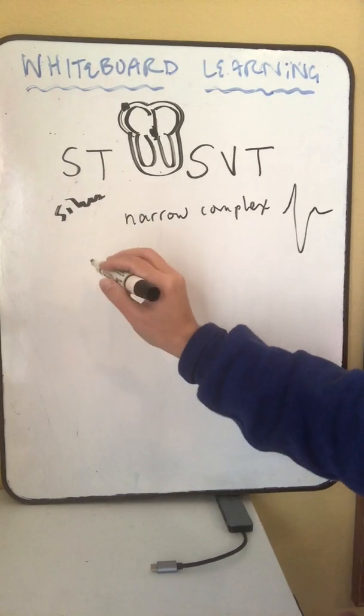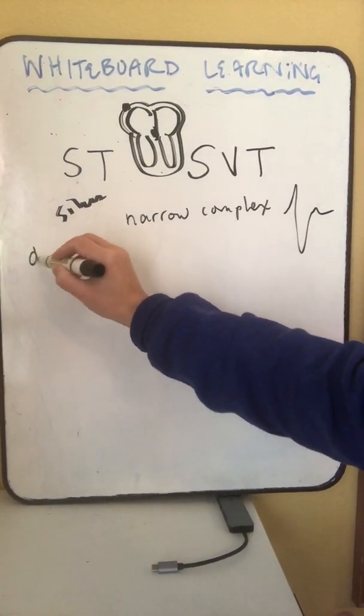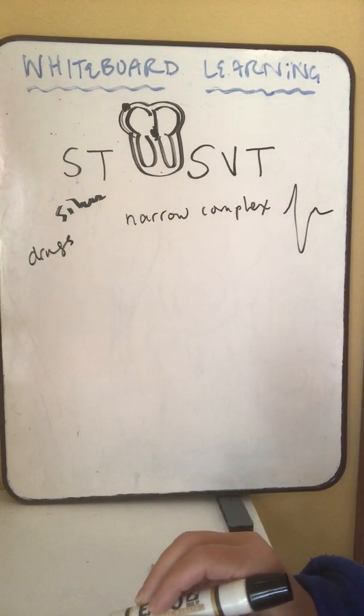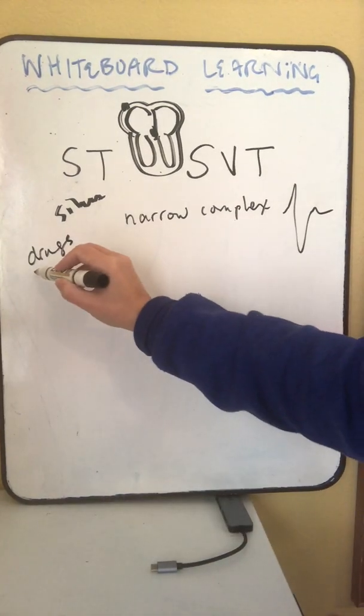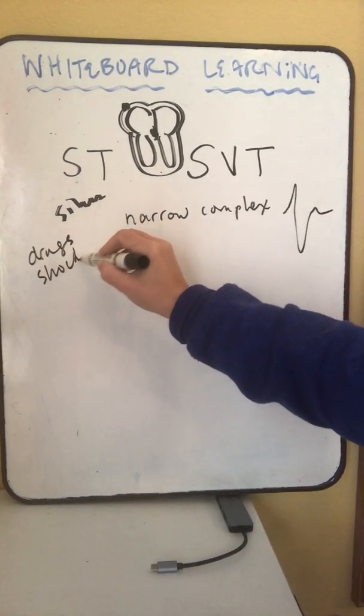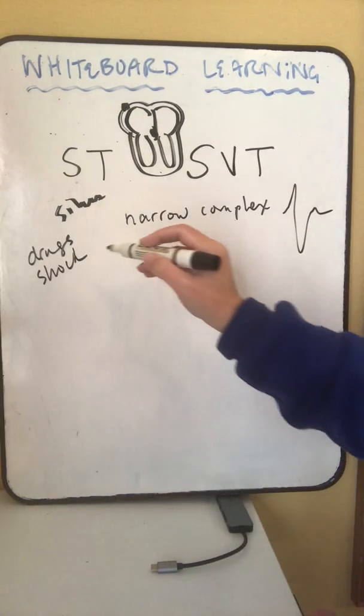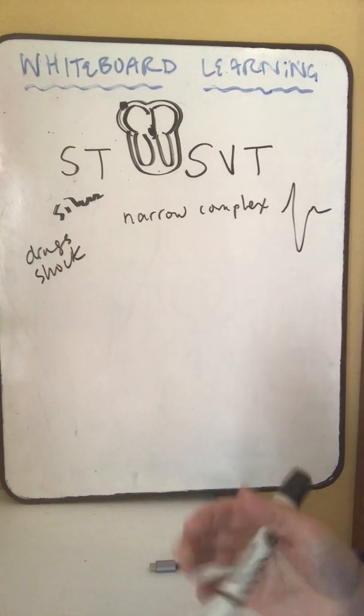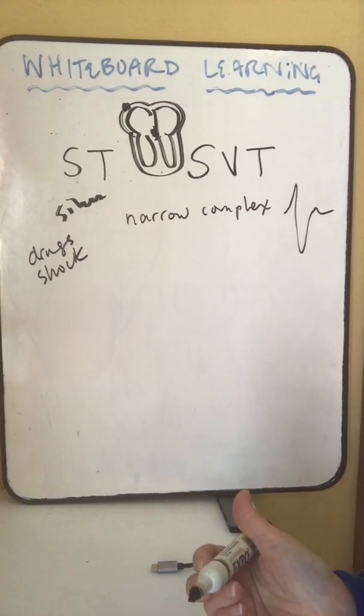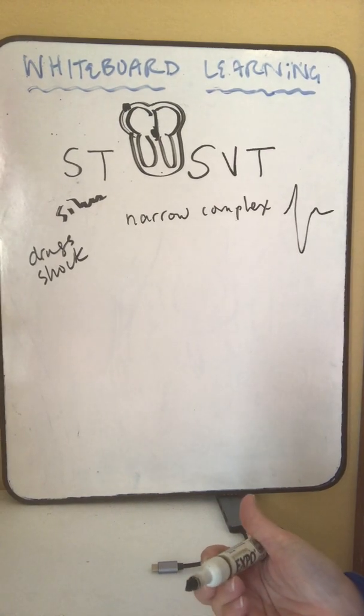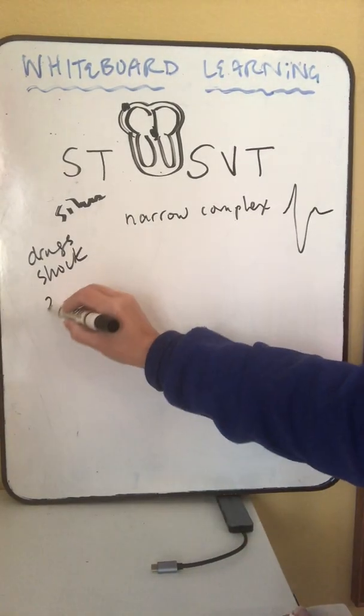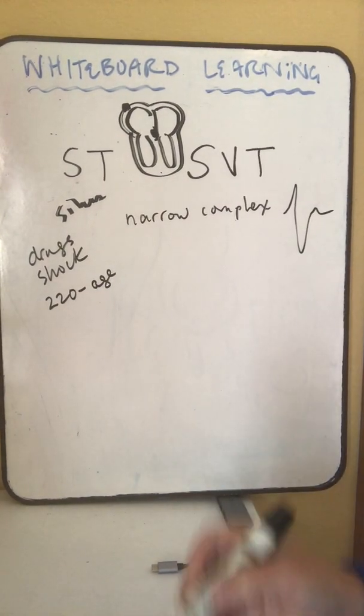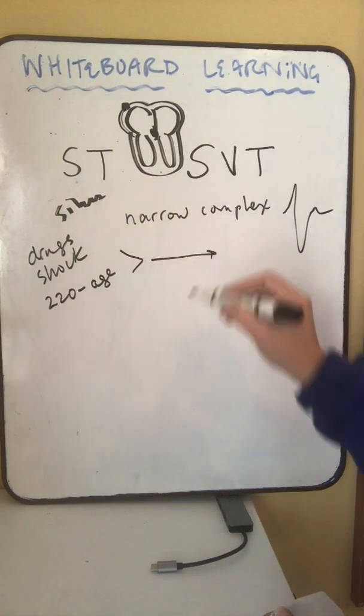Sinus tachycardia is going to occur for the usual things we think about. There might be a drug like chocolate or caffeine, or illicit drugs. It could also be from shock, hypovolemia, dehydration. Sinus tachycardia has a rate max, and it is the fastest that your heart can generally beat without there being something wrong. In humans, they'll subtract your age from 220 to get your max rate. Anything higher than that is an SVT.